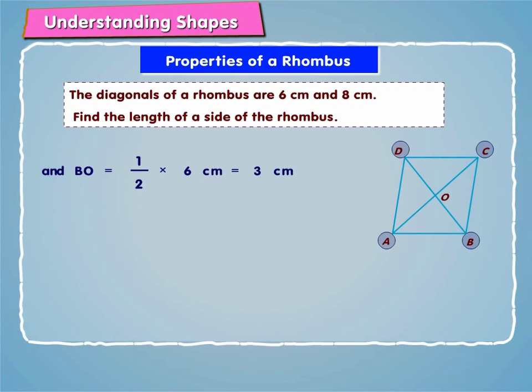Using Pythagoras theorem, AB square is equal to AO square plus BO square is equal to 4 square plus 3 square is equal to 16 plus 9 is equal to 25.